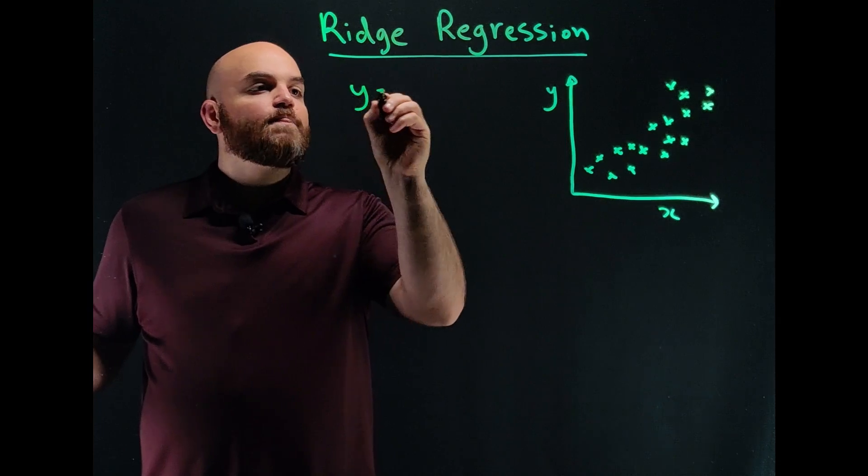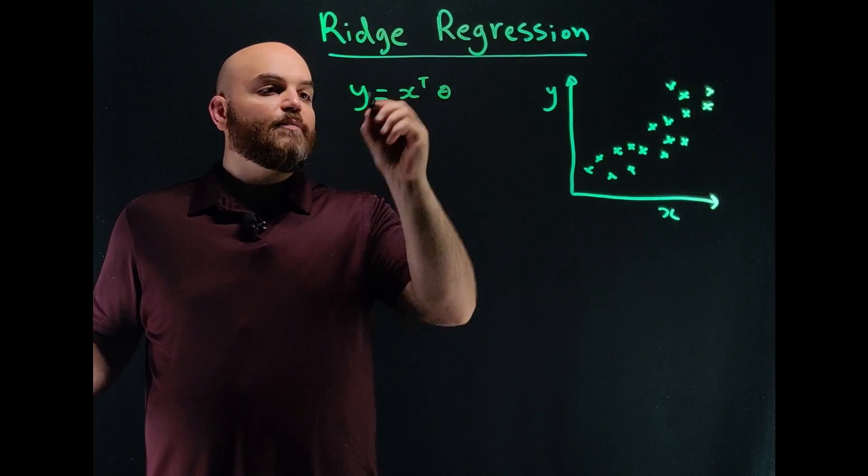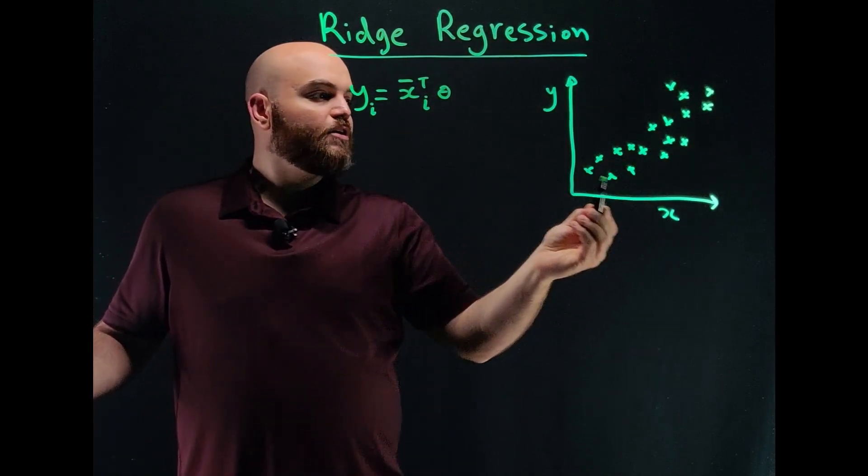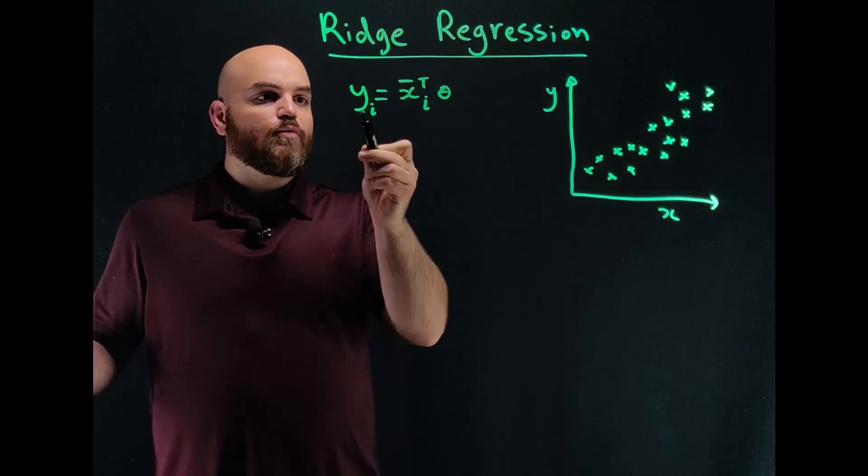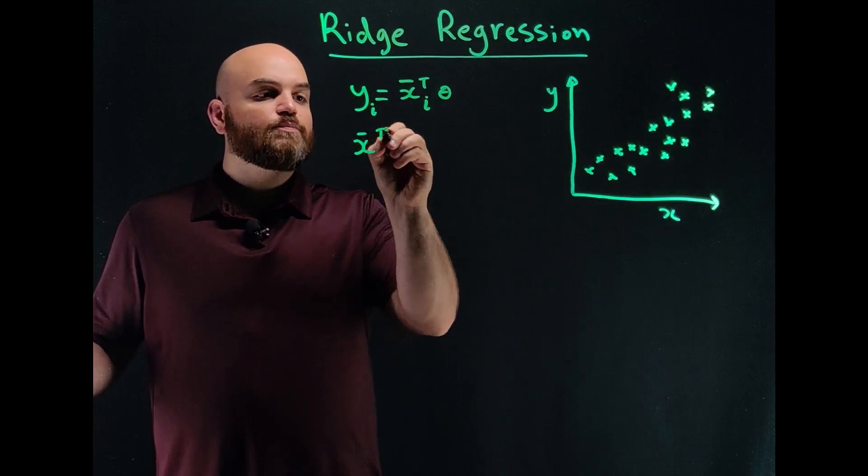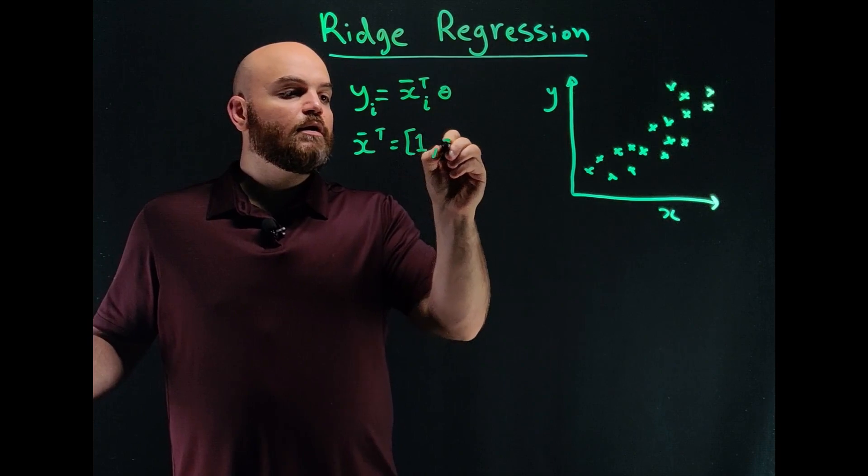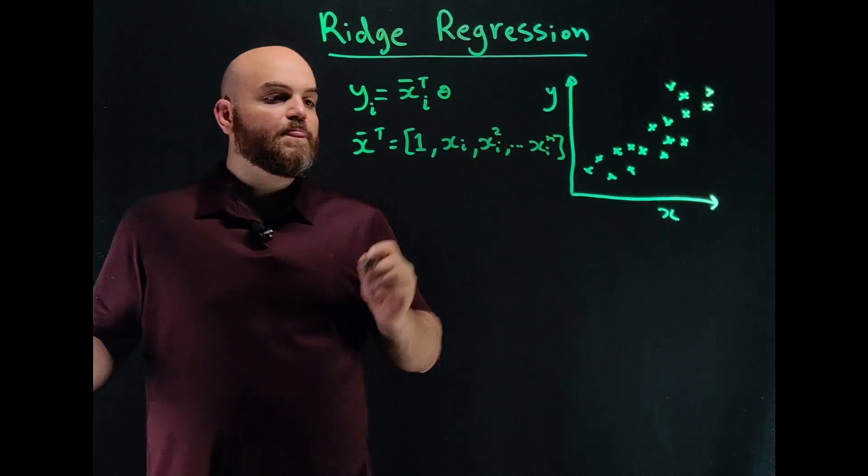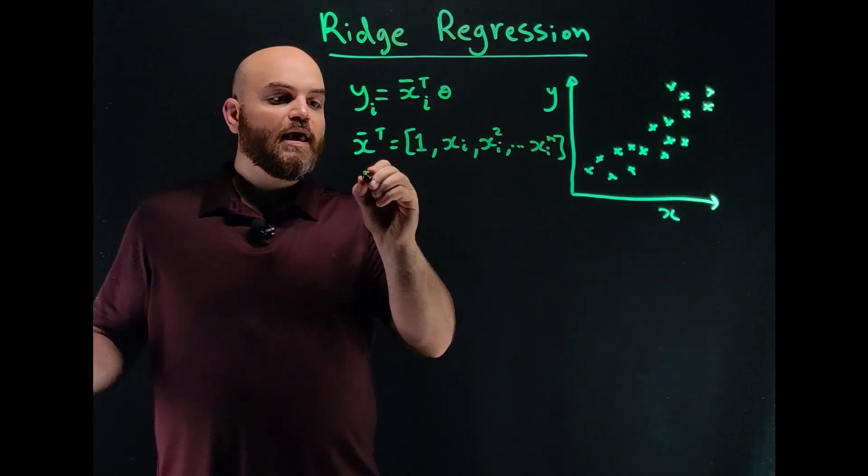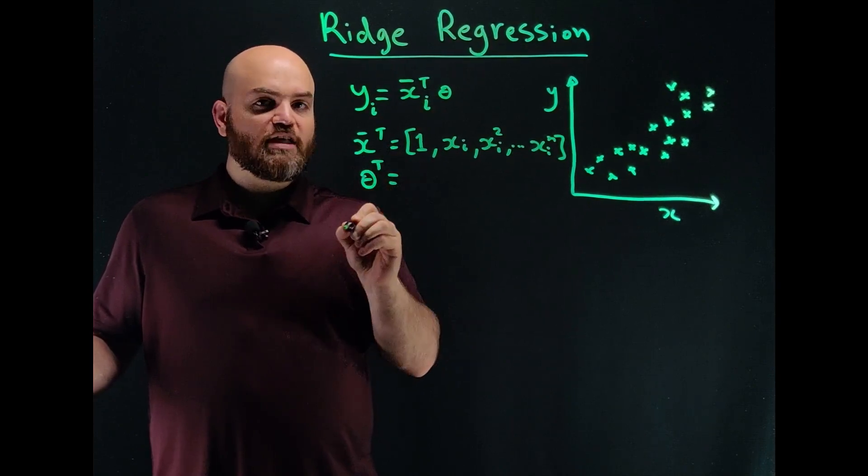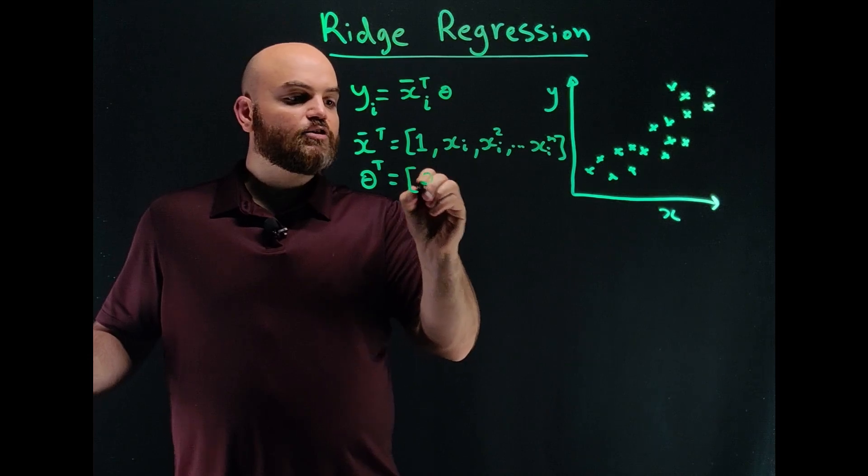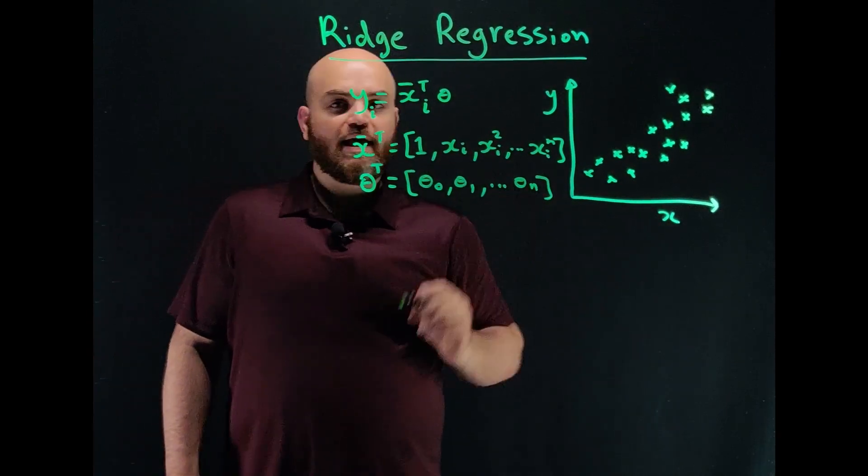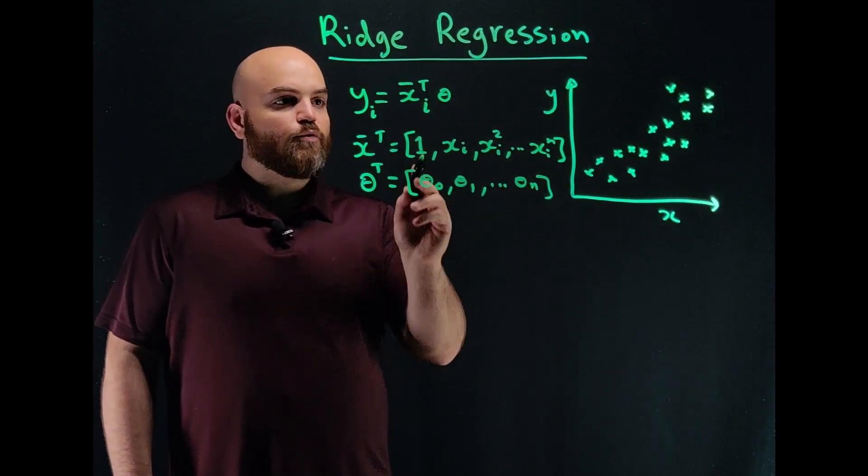So we say that yi is equal to x transpose theta. Let me just say yi and theta i bar. I'll explain what those mean in a second. i is related to every point here, so I have multiple points. This is the index for every point, so yi is x bar transpose. And x bar transpose, in this case, is 1, xi, xi squared, all the way to xi to the power n. So I have essentially an nth order polynomial. And in my case theta transpose is going to be theta 0, theta 1, all the way to theta n. So I have n parameters, and I have these nth order polynomials. When I multiply those together, I get my model, right?